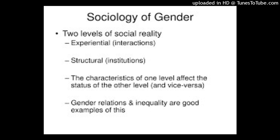Sex and gender are two words that refer to the differences between males and females. Though these two terms are commonly used interchangeably, there is a distinct difference between sex and gender. The main difference is that sex refers to the biological and physical differences between males and females, whereas gender refers to the social differences between men and women.